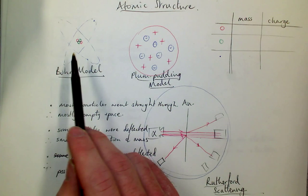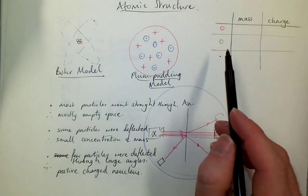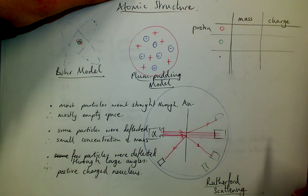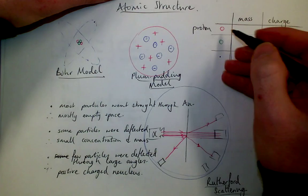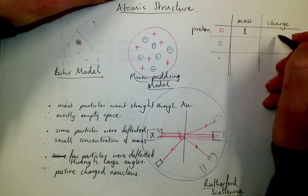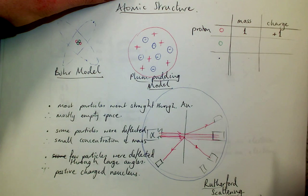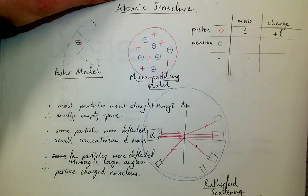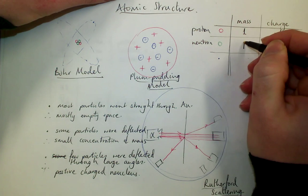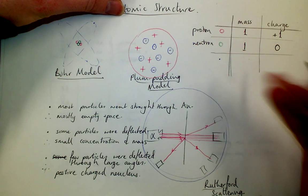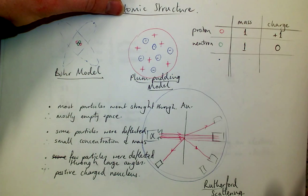So that gives us our model that we now accept. And you need to know the three particles in the atom. The first one is the proton. Its mass is 1, 1 relative atomic mass from your chemistry. And its charge is a positive charge, a positive charge of 1. You need to know about the neutron, normally drawn as a little green circle. And you need to know its mass is also 1. It's the same as a proton. But its charge is 0. It has no charge. It is neutral.